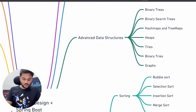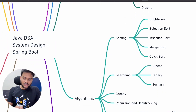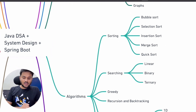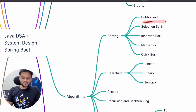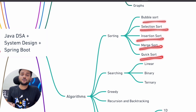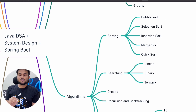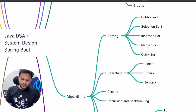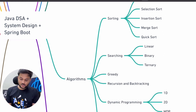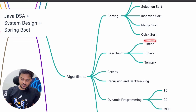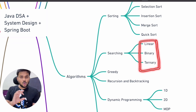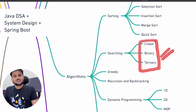We are also going to discuss a lot of algorithms, like sorting algorithms — bubble sort, selection sort, insertion sort, merge sort, quick sort, counting sort, and heap sort. We will also see some searching algorithms like linear search, binary search, and ternary search.